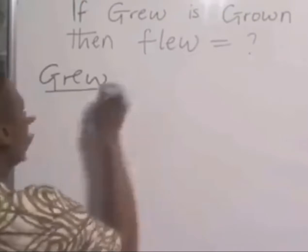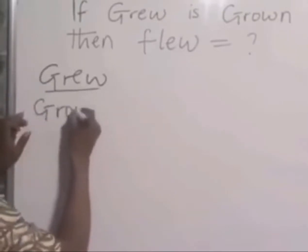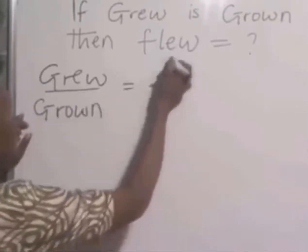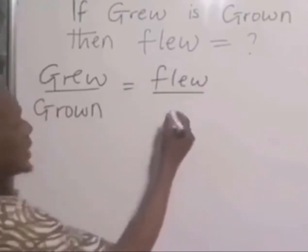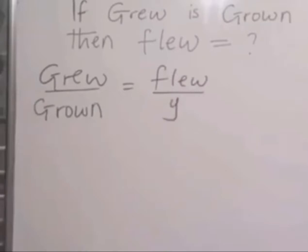Grew over grown is equal to flew over... The past participle we don't know, so we can represent it with a y. Then cross-multiply.